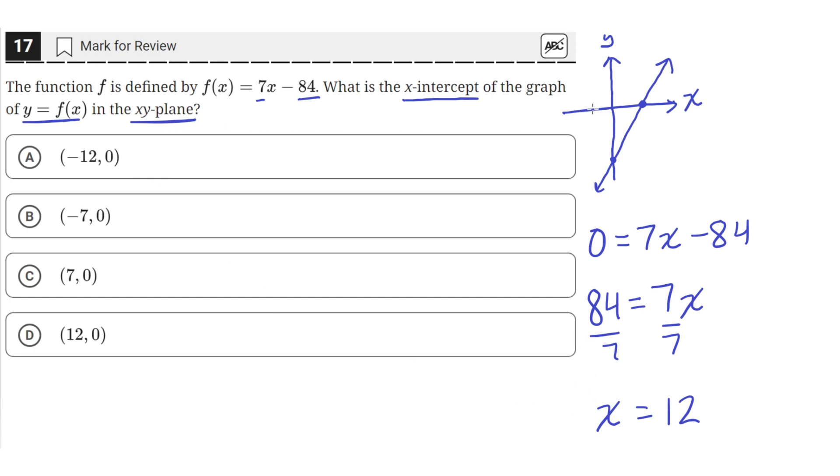So the value of the x-coordinate at the x-intercept is 12. So the coordinate of this point is an x-value of 12, and y is just 0, since y is always 0 on the x-axis. So the correct answer choice is D.